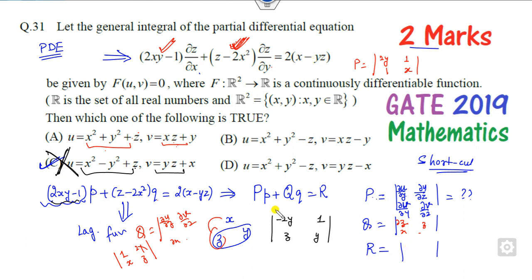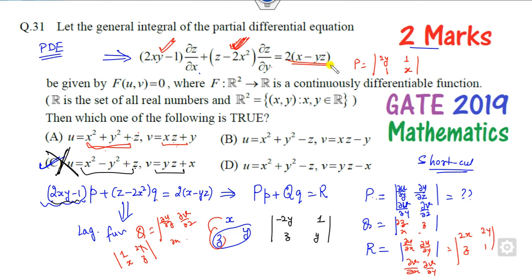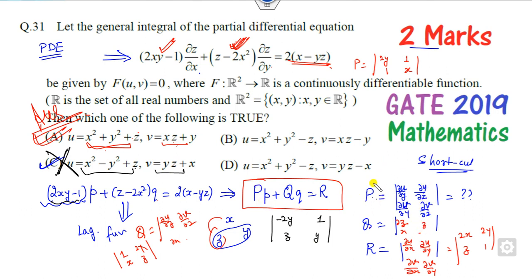Finally, look at R, which involves x and y. Take the partial derivative of u with respect to x, which is 2x, then 2y, and the remaining entries z and 1. The determinant gives 2x minus 2xy — that is the right answer. You can verify the other options do not satisfy this. Remember: whenever you have a PDE in this standard form, there is no need to use the Lagrange or Monge formula — just use this cyclic determinant approach to get two marks quickly and simply.